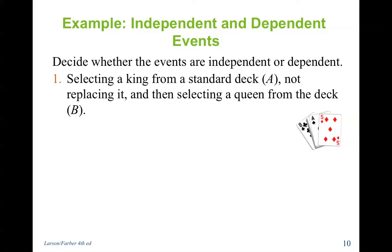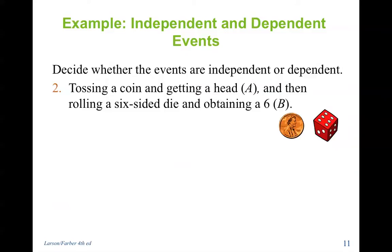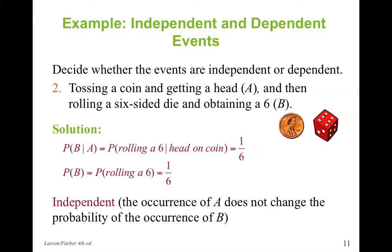Deciding whether events are independent or dependent: selecting a king from a standard deck, not replacing it, and then selecting a queen — these are dependent, because removing the king changes the total to 51 cards, affecting the probability outcome. Tossing a coin and getting a head, then rolling a six-sided die — these are independent, because tossing the coin does not change the outcome of rolling the die. The probability of rolling a six is one out of six regardless.